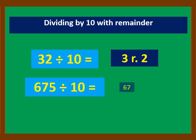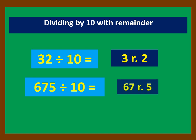So the answer for 675 divided by 10 is 67, remainder 5.